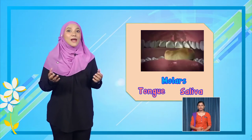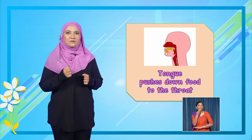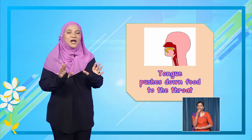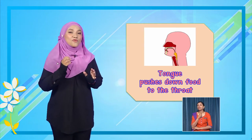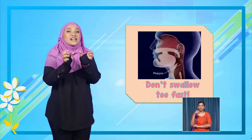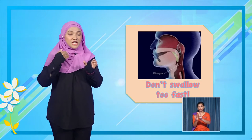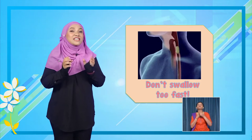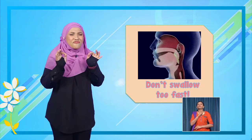What happens next? When the food has been ground properly, the tongue will then push the chewed food to the throat to be swallowed. Next, the food will go through the esophagus. Now, there are two pipes or tubes that are connected to your mouth — one is for the air that we breathe in and breathe out, and the other one is for food, the esophagus. So we must not swallow our food too fast.